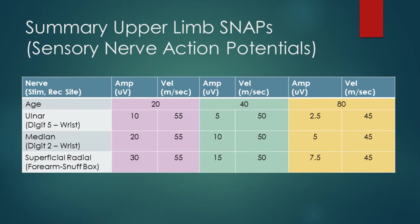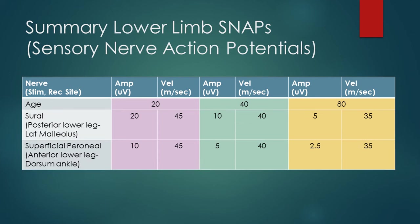In the lower limb, the two main sensory nerves tested are the sural and the superficial peroneal, with amplitudes of roughly 10 and 5 microvolts respectively at age 40. At age 80 the sural may be ~5 microvolts; at age 20, ~20 microvolts. Velocities are approximately 35 m/s for older patients, 40 m/s for middle-aged, and 45+ m/s for younger patients.